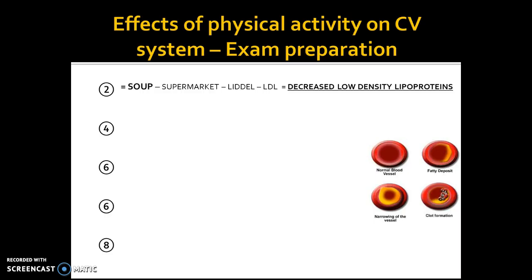Number 4 rhymes with 'reward.' Reward makes you think of a trophy, and when you get a trophy you get excited — some people might say hyper. So you're thinking hypertrophy, and because we're talking about the cardiovascular system the key muscle that hypertrophies or gets bigger is cardiac hypertrophy. If you increase cardiac hypertrophy that increases your pumping capacity, which increases stroke volume and cardiac output. To increase stroke volume and cardiac output, blood vessels and arteries have to vasodilate and vasoconstrict. This constant vasodilation reduces elasticity, which prevents arteriosclerosis — the hardening of the artery or coronary artery wall.